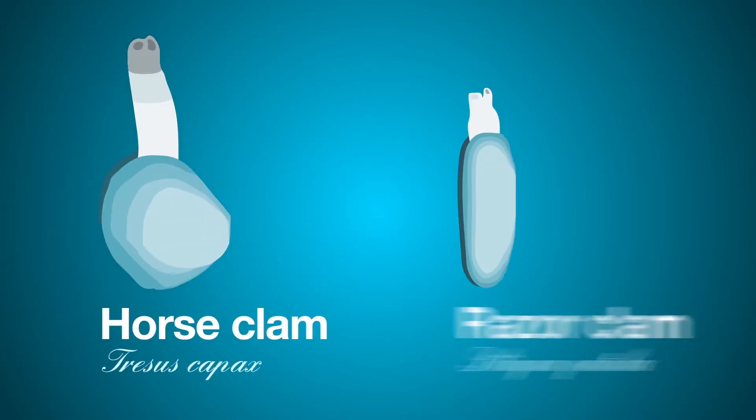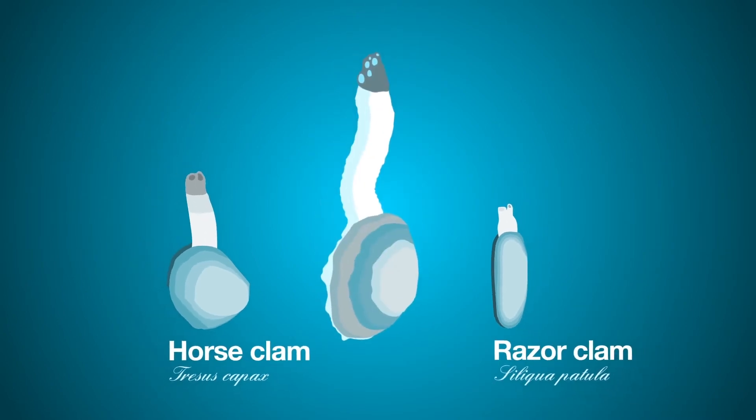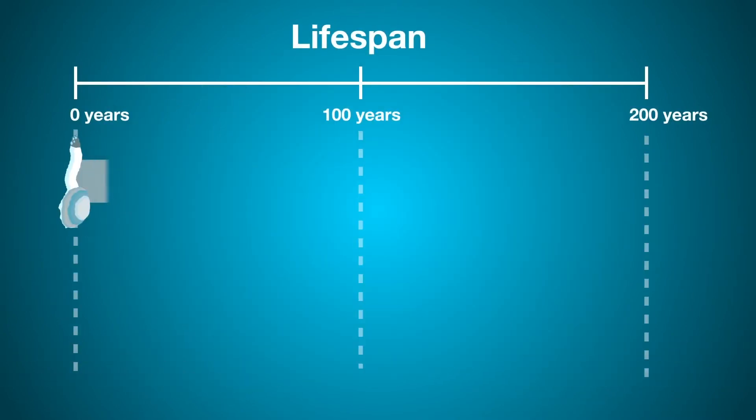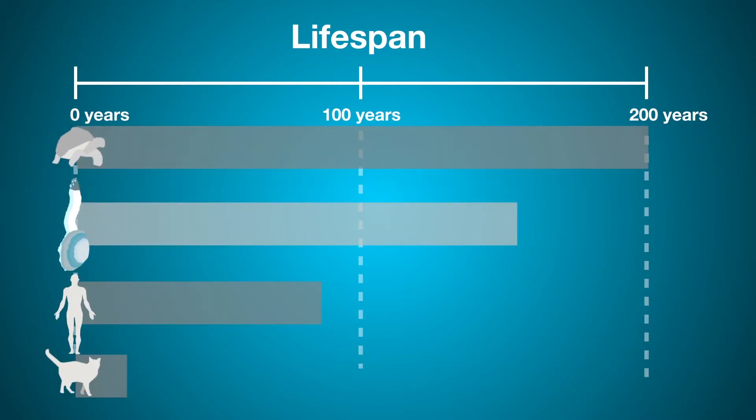Geoducks are the largest burrowing clam in the world. Predominantly found in Puget Sound, they can live up to 160 years. That's one of the longest lifespans in the entire animal kingdom.